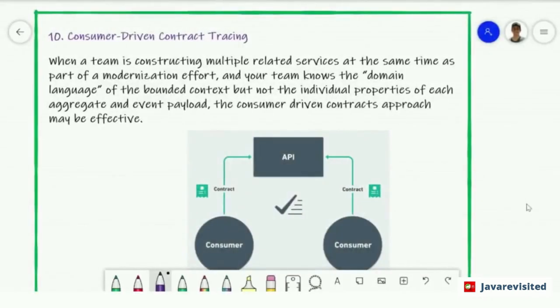The last pattern is Consumer-Driven Contract Tracing. When a team is constructing multiple related services at the same time as part of a modernization effort and your team knows the domain language of the bounded context but not the individual properties of each aggregate and event, the Consumer-Driven Contract approach may be effective.